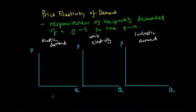The price elasticity of demand relates to the responsiveness of the quantity demanded of a good or service to its price. There are three different types: firstly, an elastic demand; secondly, a product with unit elasticity; and thirdly, a product with an inelastic demand curve.